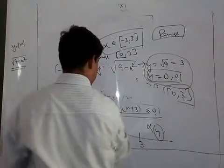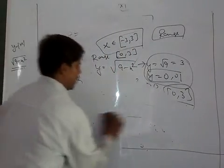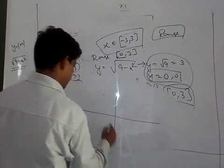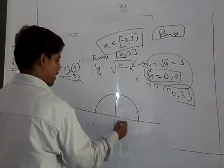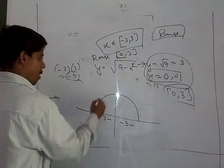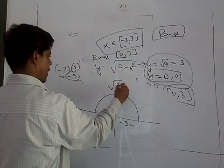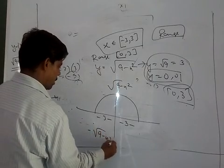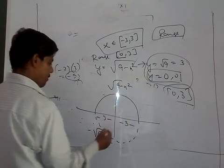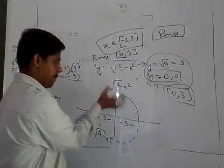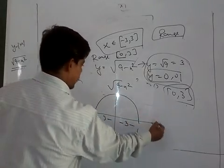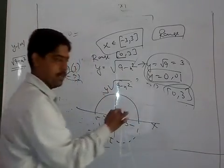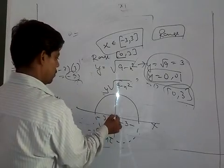Later on when we graph this, root of 9 minus x square is a semi-circle graph. This is a semi-circle with radius of 3 units on the positive side. If this is minus root of 9 minus x square, it would be on the negative side.